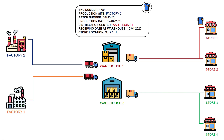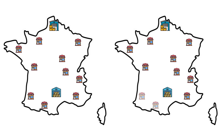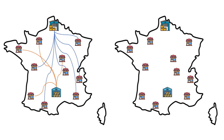This data can be used to optimize your distribution network. Let's assume that you have two warehouses to distribute all your stores in France. Your current network is optimized for the store delivery only, but if you switch to a circular economy, you need to ensure that the reverse flow is also optimized to reduce costs and to reduce the environmental footprint. This can be done with linear programming.